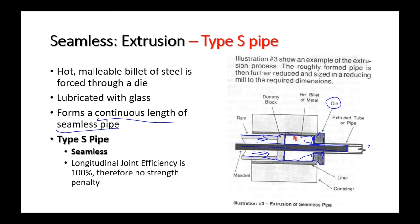A hydraulic ram with lots of pressure forces the hot billet through that annular space, and what comes out is a pipe. As the ram is pushed in, you pull it out, place another hot billet, and each billet forge-welds onto the next from the force within the block.